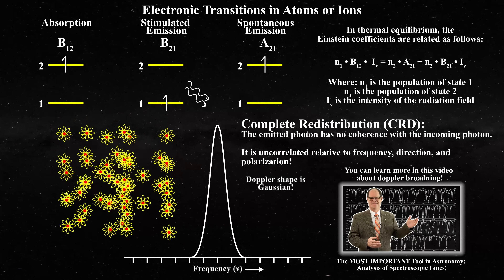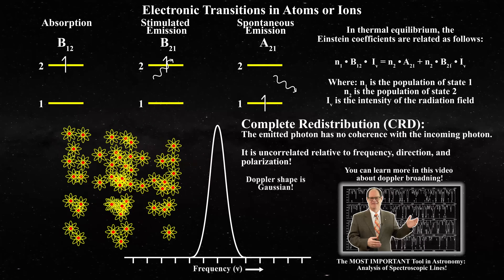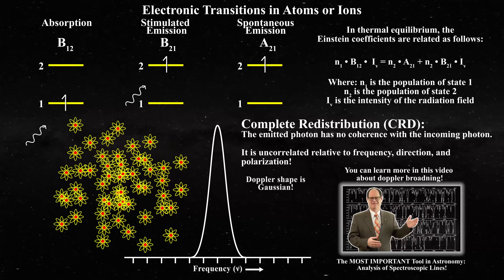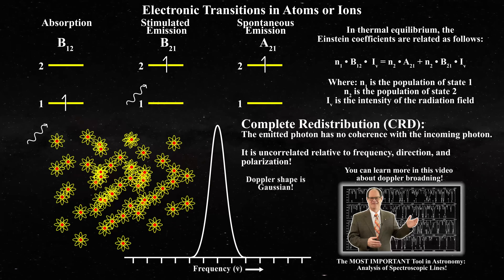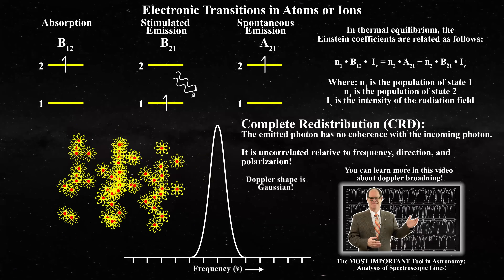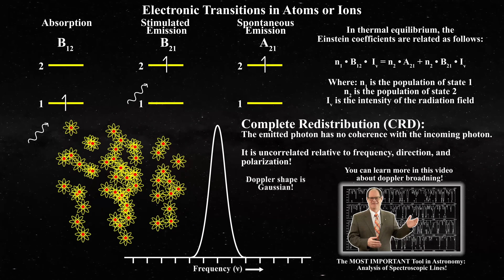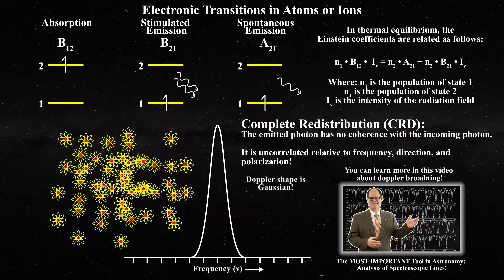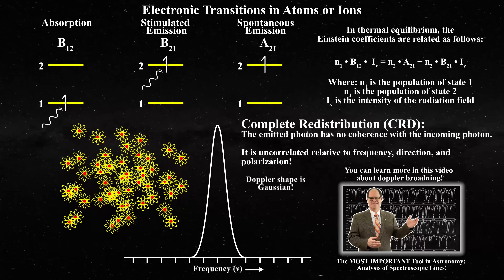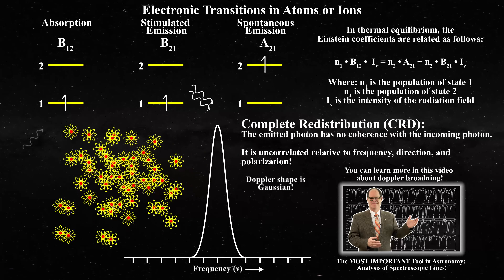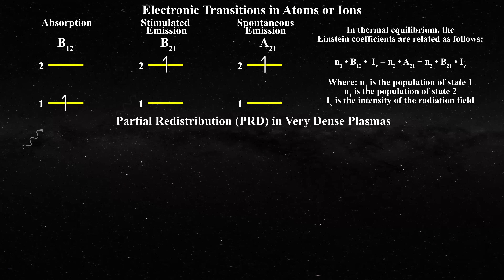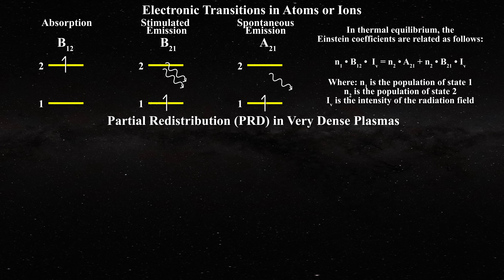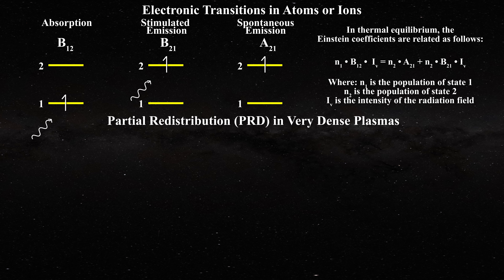Complete redistribution is what one expects in sparse plasmas, because under such conditions there is no possibility for the excited ion to interact or be coordinated with its neighbors — the densities are just too low. That is why if solar physicists are correct about the assumed density of the chromosphere, one should be able to analyze all spectroscopic lines with complete redistribution. No other process should occur in a sparse plasma without inter-ionic interactions. Conversely, in very dense plasmas something interesting happens.